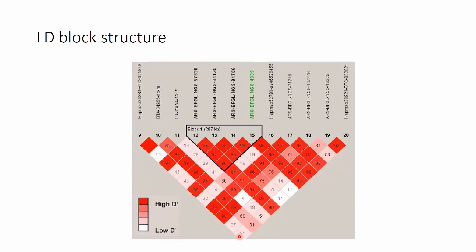Also there are segments on the genome called LD blocks, where all pairwise combinations of the SNPs yield a high LD, so basically this whole block is inherited in one piece.